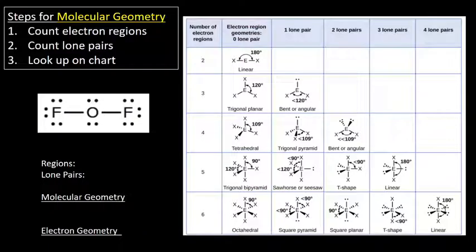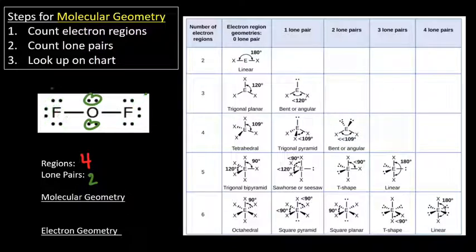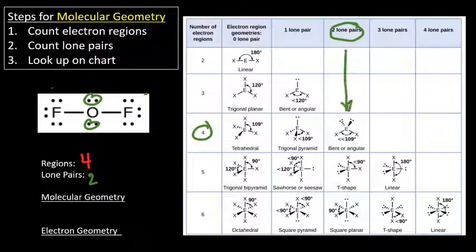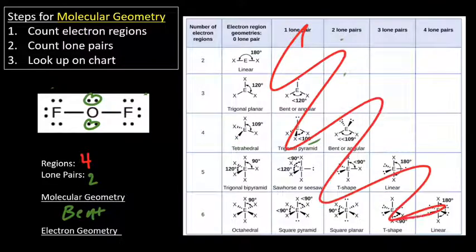Here we have OF2. I'm going to count the regions around the central atom, which is oxygen: one, two, three, four regions. Now counting just lone pairs on the central atom: one, two. Remember, the lone pairs on fluorine don't count — we're only looking at the central atom. So for molecular geometry, I go to four regions and two lone pairs, which once again gives me a bent or angular molecular geometry. For the electron geometry, I always use the first column, so with four regions that's tetrahedral.